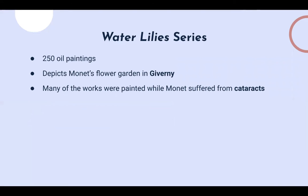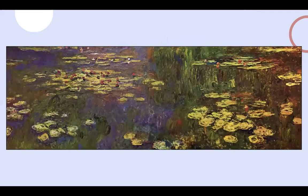Next, let's talk about the Water Lily series. The Water Lily series consists of about 250 paintings and they depict Monet's flower garden in his home in Giverny. Interestingly, many of the works were actually painted when Monet suffered from cataracts. It's not important to know each individual painting, but just to know what the series entailed and that it took place in Giverny.